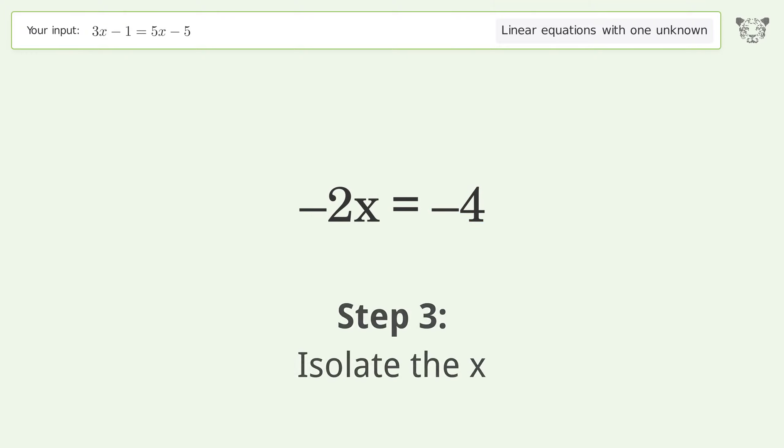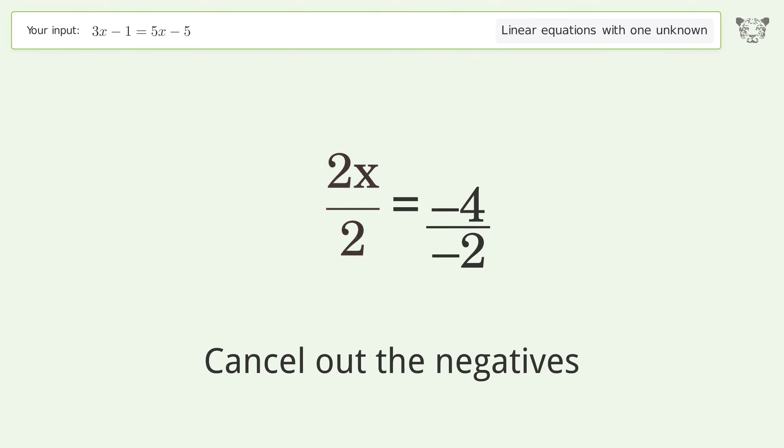Isolate the x. Divide both sides by negative 2. Cancel out the negatives. Simplify the fraction.